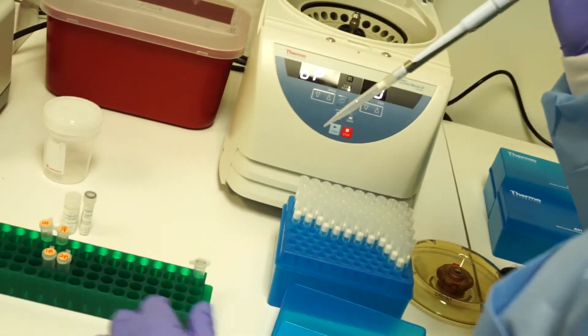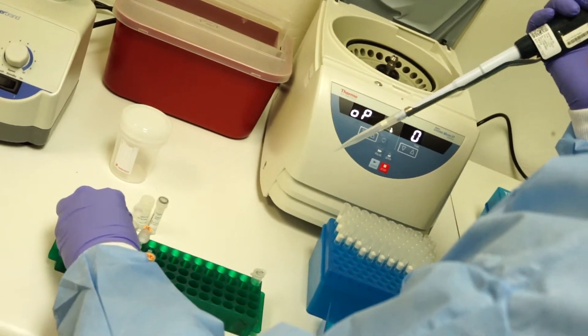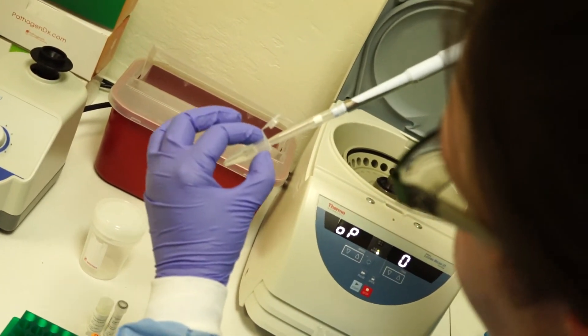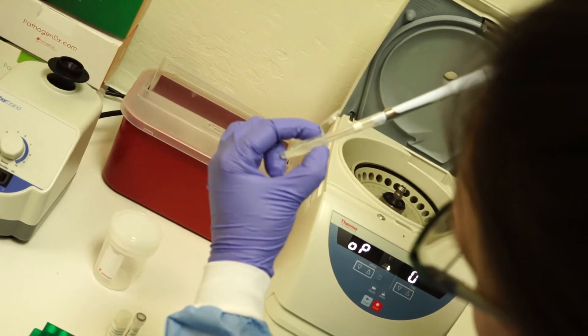Set your pipetter to 1 ml and carefully transfer the supernatant. Avoid the pellet or plant debris shown at the bottom.